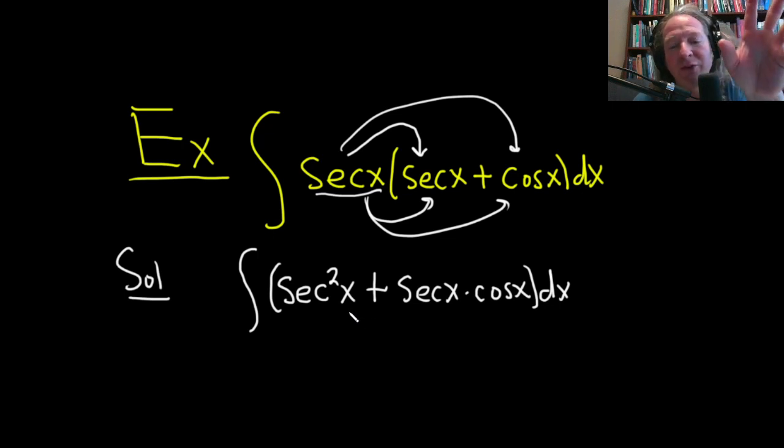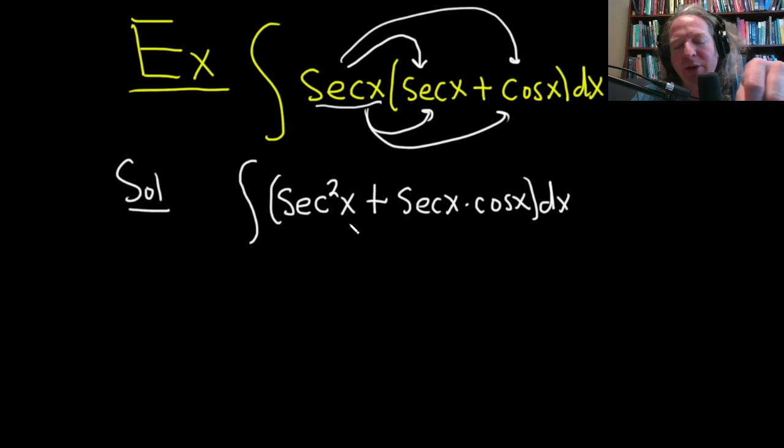So the derivative of tangent is secant squared. So when we integrate secant squared, we're going to get the tangent function. So that's pretty simple.